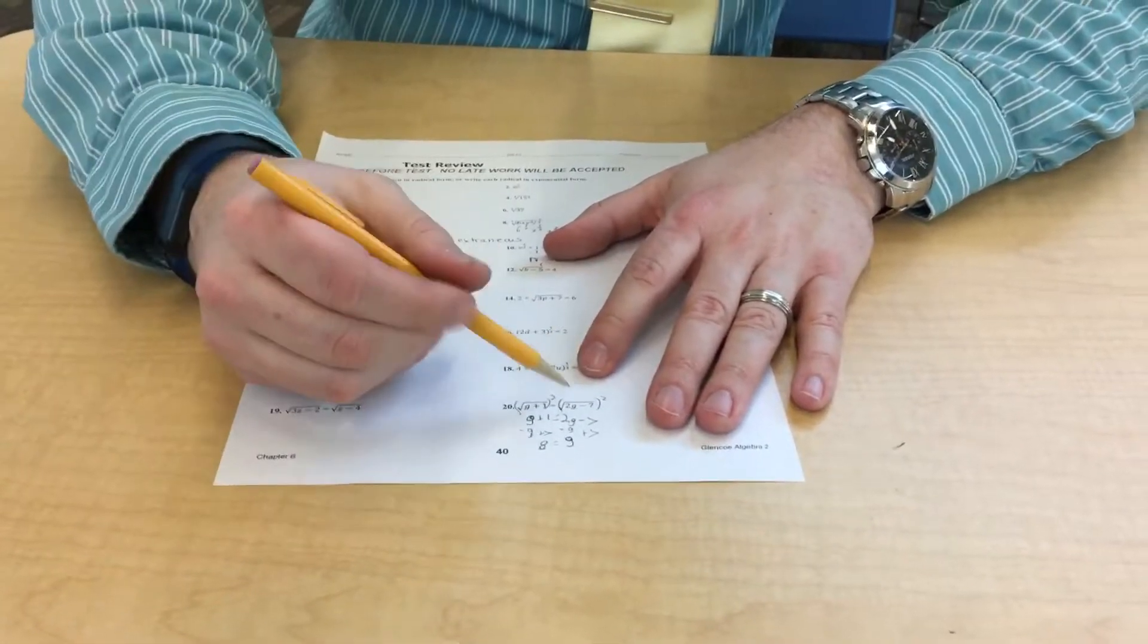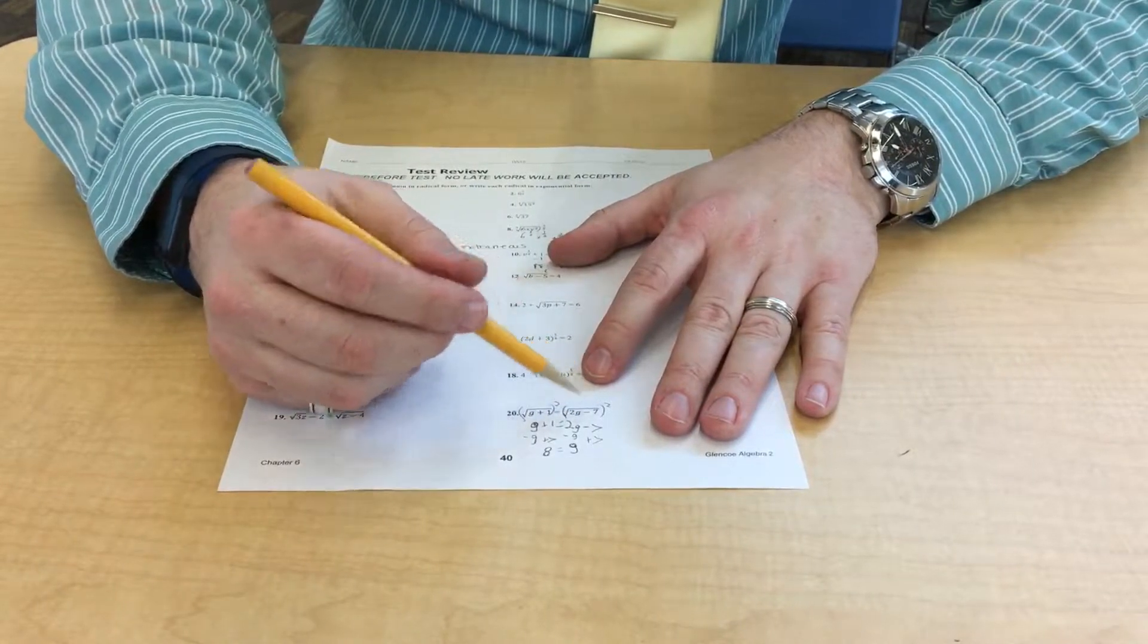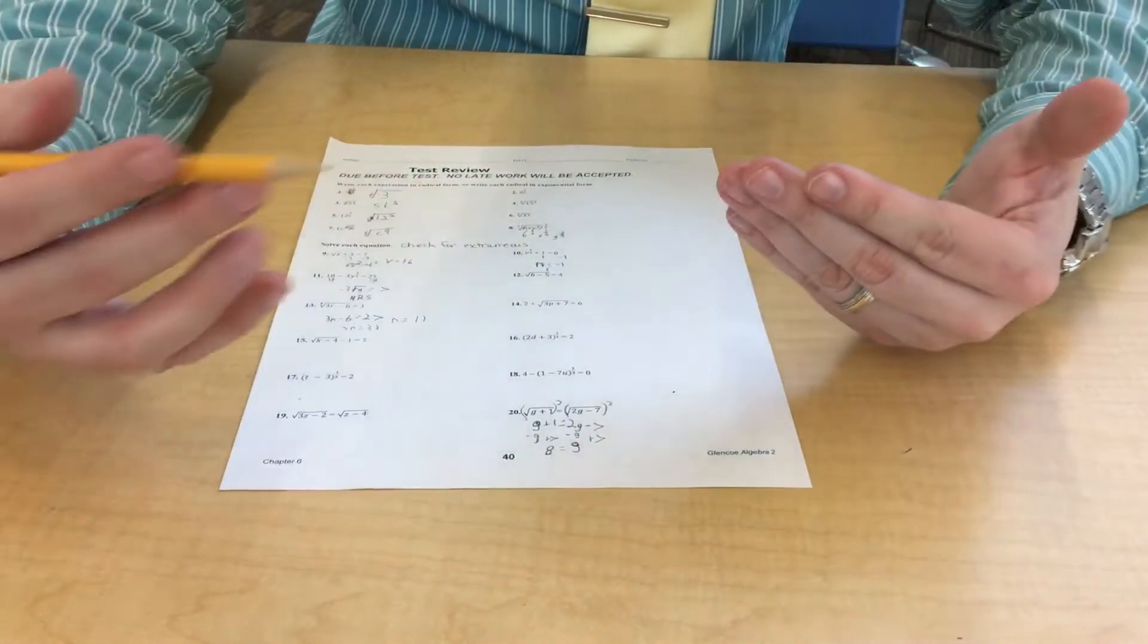8 plus 1 is 9. The square root of 9 is 3. 2 times 8 is 16. Minus 7 is 9. The square root of 9 is 3. It checks out.